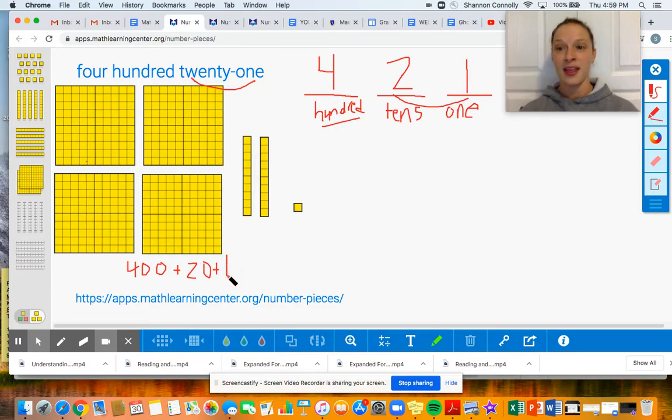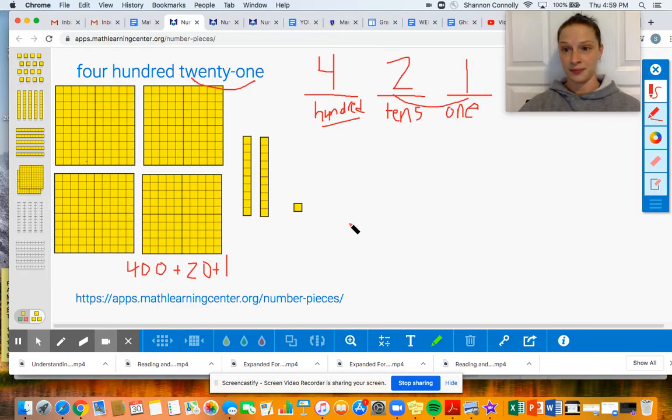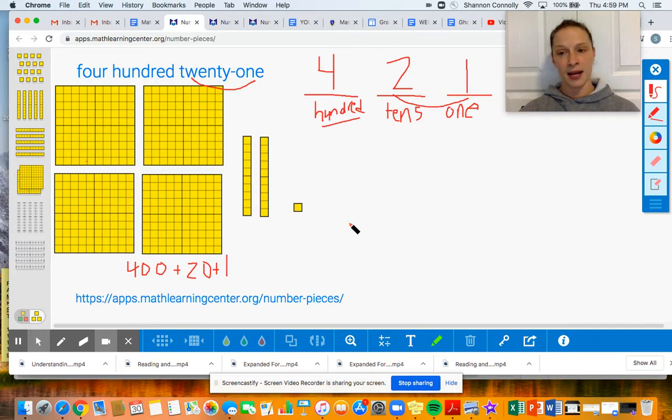And I see that I have four groups of 100, two groups of 10, and 1. So I see that I have 400 plus 20, this is going to come up on your expanded form video, friends, and I have 1. And I know that if I wrote that number in standard form, which is what we call this, I have 421.